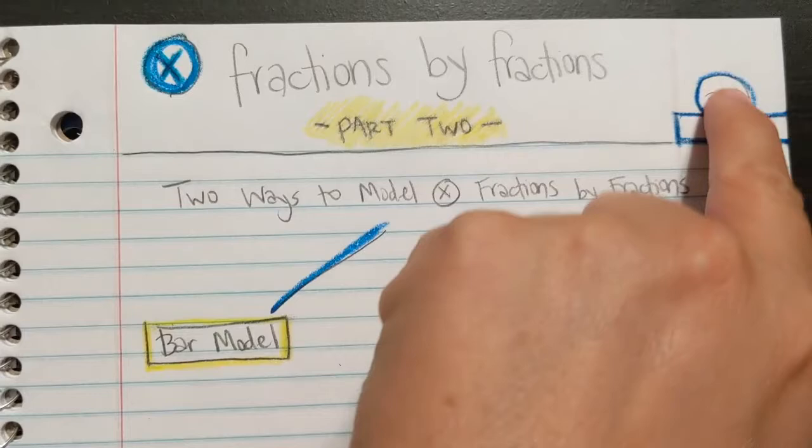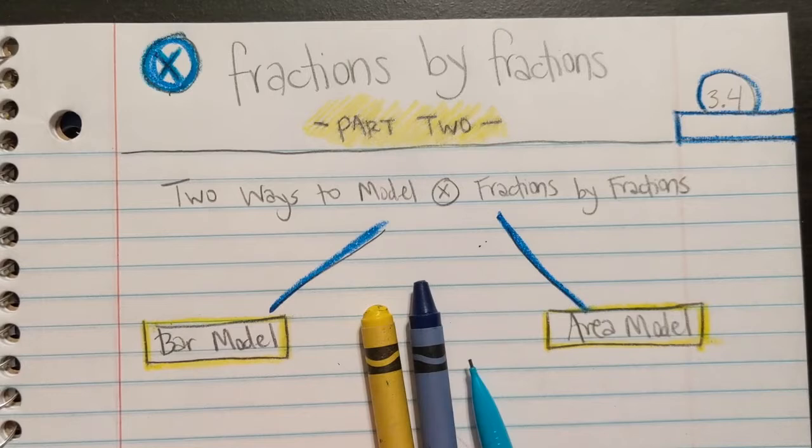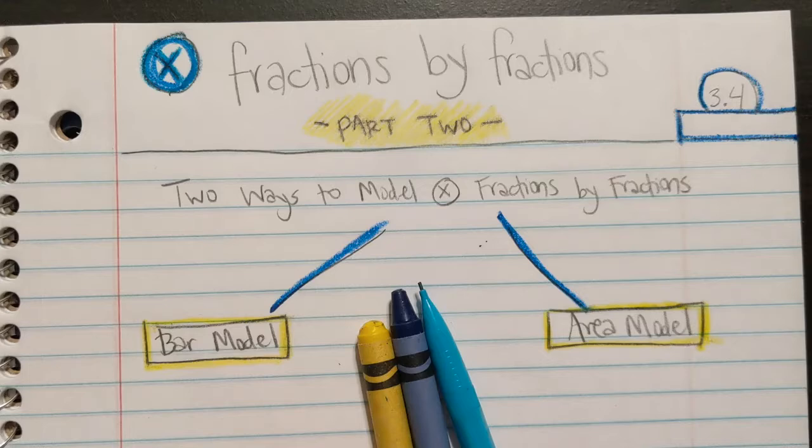Today's lesson is multiplying fractions by fractions, part two of three point four. Make sure you put the date. You need blue and yellow. Ms. Fisher found colors that are going to work well together. Blue and yellow. And you need to set your journal up like this. Push pause until it gets done.